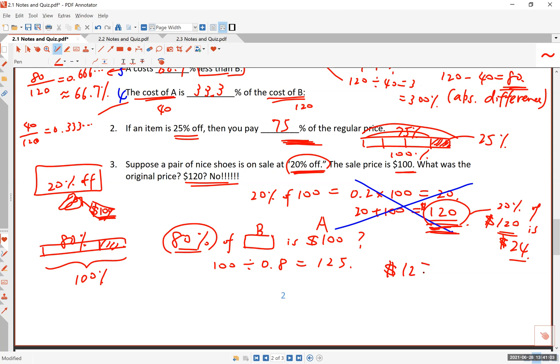125 is the original price of these shoes. Now let's check, you know, what is 20% of 125? That's 0.2 times 125. And that turns out to be exactly $25. You knock off $25 from 125. The answer is going to be a hundred dollars. And that is indeed your sales price. So this is the correct answer, right?